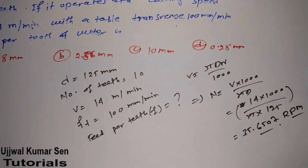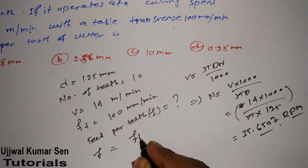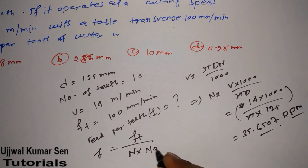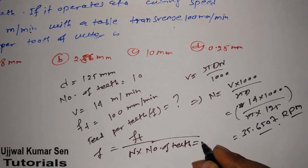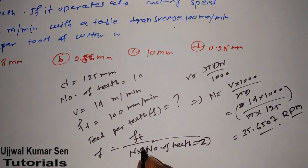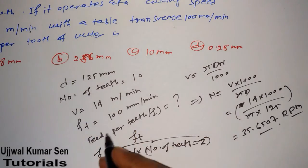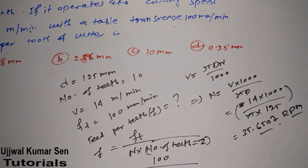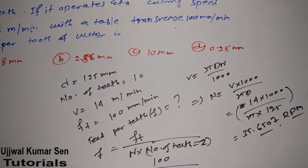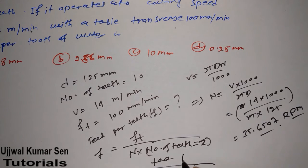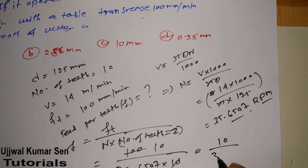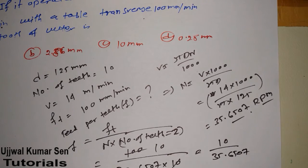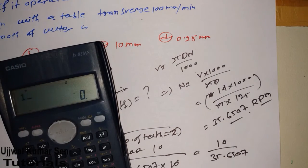Now let's move to the formula which is most important for finding the answer: feed per tooth equals ft divided by N times number of teeth. Sometimes it's also called Z. ft is 100, N is 35.6507, and Z is 10. So 100 divided by 35.6507 times 10.